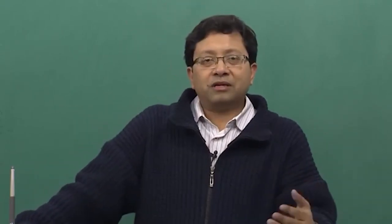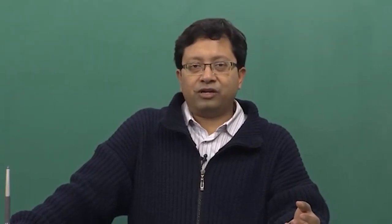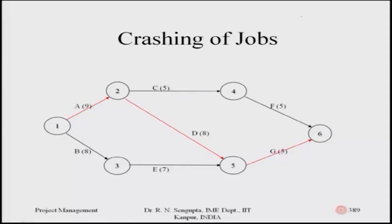This has been replicated in the activity-on-arc network diagram format. The jobs on the critical path — based on total slack and free slack — are A, D, and G. The total time required is twenty-two: nine plus eight is seventeen, seventeen plus five is twenty-two. The total cost includes activities A, B, C, D, E, F, and G all combined, which comes to fifty-five.